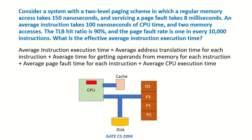Consider a system with a 2-level paging scheme in which a regular memory access takes 150 nanoseconds and servicing a page fault takes 8 milliseconds. An average instruction takes 100 nanoseconds of CPU time and 2 memory accesses. The TLB hit ratio is 90% and the page fault rate is 1 in every 10,000 instructions. What is the effective average instruction execution time?